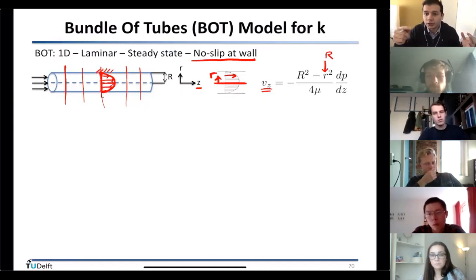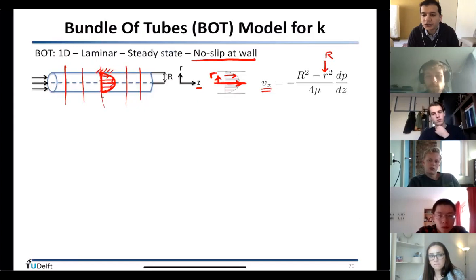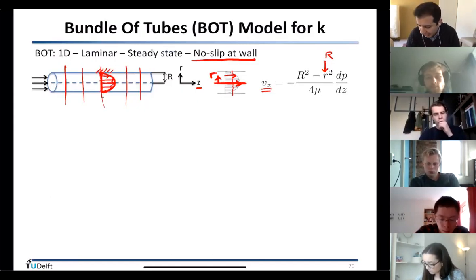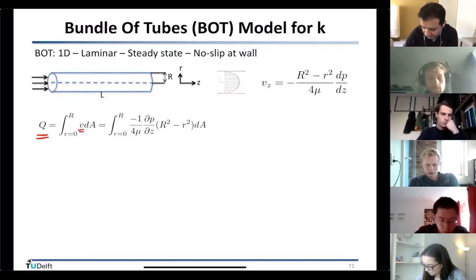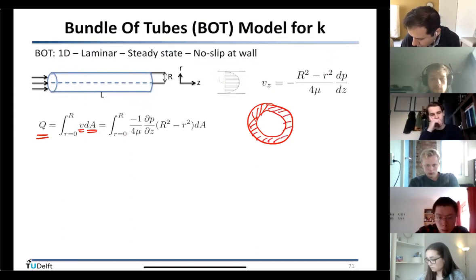When r equals R (the wall), vz is zero. Maximum velocity occurs at the center (r = 0) because the formula is R² minus r², subtracting something, so maximum is at center — which is expected. Now let's find the average velocity across this channel. The average flow rate Q is the integral — summation of all velocities at each cross-sectional area element.